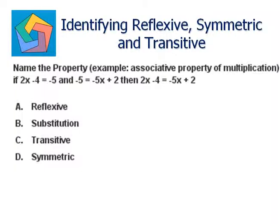Name the property, example: associative property of multiplication. If 2x minus 4 equals negative 5, and negative 5 equals negative 5x plus 2, then 2x minus 4 equals negative 5x plus 2.